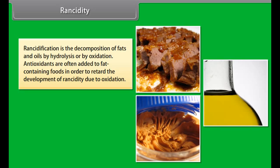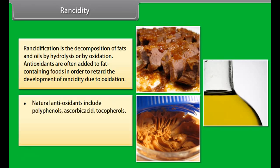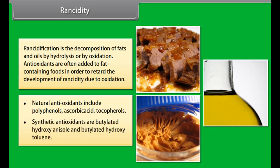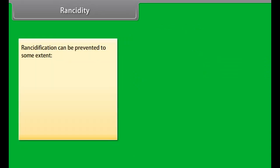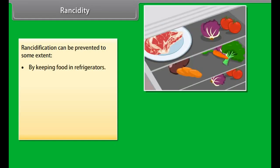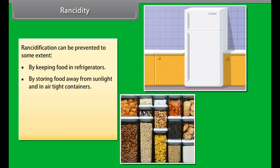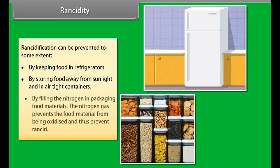Corrosion: Old iron gates turn reddish-brown in color — this is rusting of iron. Some other materials also tarnish the same way: the black coating on silver and the green coating on copper are other examples of corrosion. Corrosion is the process by which metals are eaten up gradually by the action of air, moisture, or a chemical on their surface.